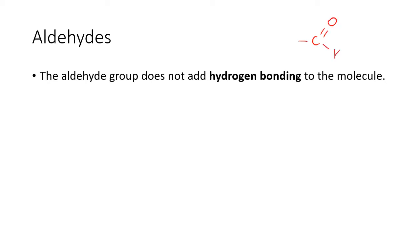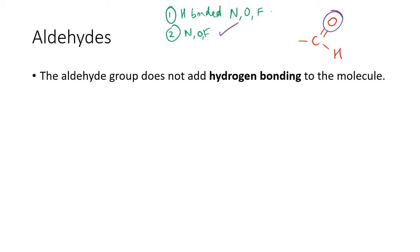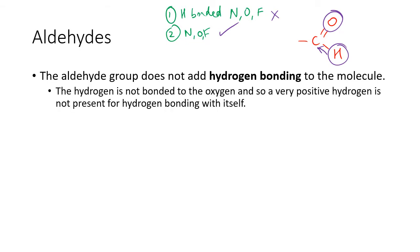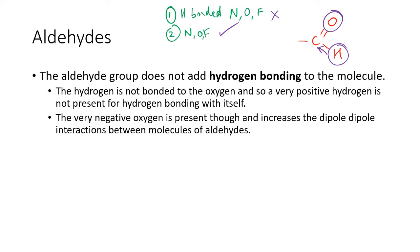The aldehyde group does not add hydrogen bonding to molecules. Here is your aldehyde group. There are two things you need for hydrogen bonding: number one, a hydrogen bonded to a very electronegative element — N, O, or F; and number two, an N, O, or F present. Aldehydes have number two because there's oxygen, but the hydrogen here is bonded to a carbon, not to nitrogen, oxygen, or fluorine. So there is no hydrogen bonding within aldehydes by themselves.